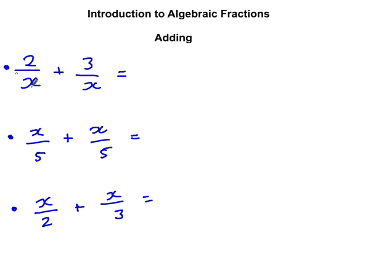We'd do exactly the same thing in this case here. We've got 2 over x plus 3 over x, so altogether we've got 5 over x. The denominator stays the same.